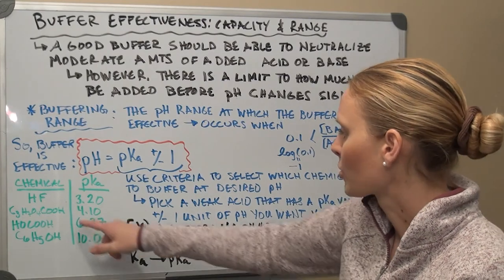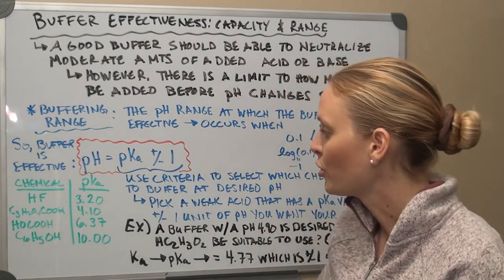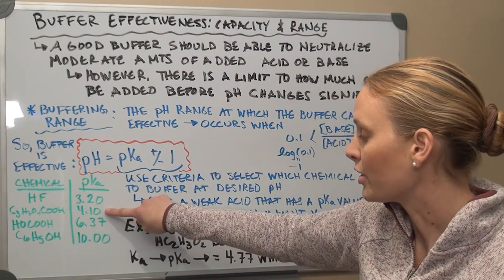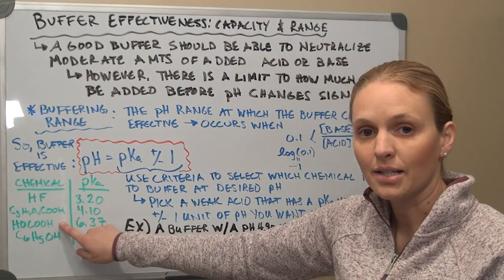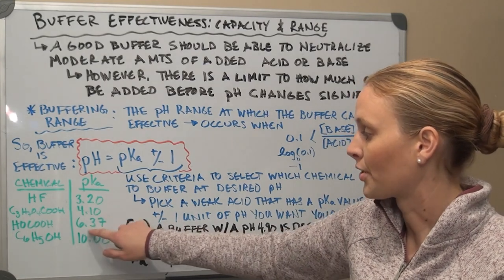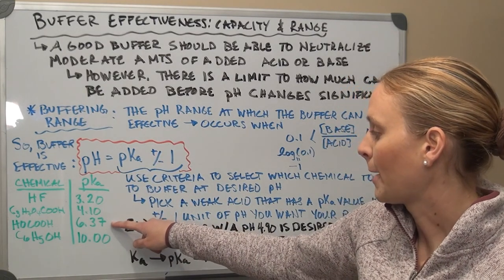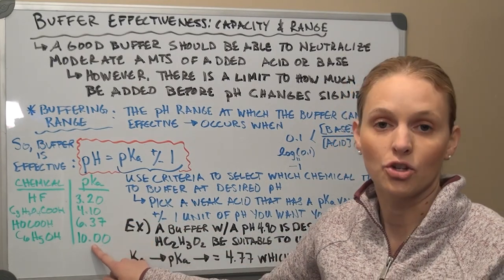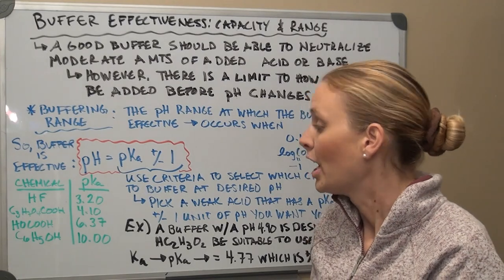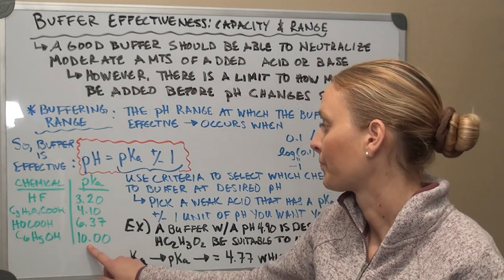For a buffer at pH 9.5, you could pick phenol, which can buffer at that pH. For pH 12 or 13, you'd need something even more basic than the chemicals listed. The key point is that you must match your weak acid's pKa to within ±1 of your target pH when selecting buffer components.